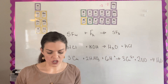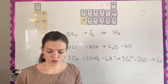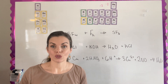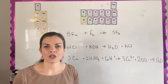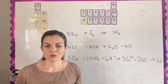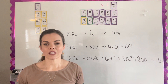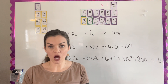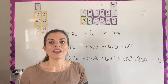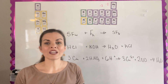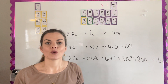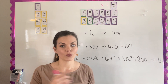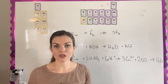Question number six gives you three balanced chemical equations and asks you to indicate whether each is a redox reaction, what is oxidized and what is reduced, and what is the oxidizing agent and the reducing agent. Before doing this, you need to understand what it means to be oxidized versus reduced. In chemistry we use the mnemonic LEO says GER: Loss of Electrons is Oxidation; Gaining Electrons is Reduction.